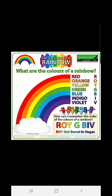These colors are in a rainbow. How do we remember them? We remember it as VIBGYOR. We start from the color at the bottom: Violet, Indigo, Blue, Green, Yellow, Orange, and Red. These are the seven colors of the rainbow, and the short form to remember is VIBGYOR.